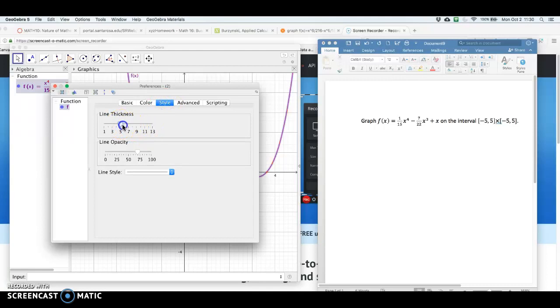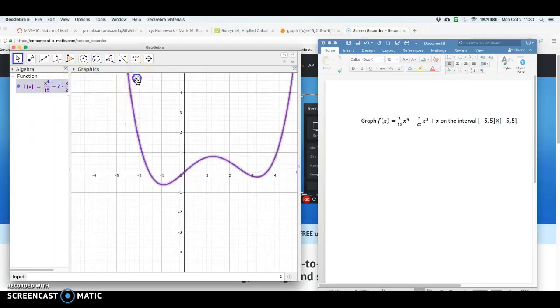And if I click on style, I could increase the line thickness if I want to make this, say, a thicker line. So notice I've got the function, the caption f of x, thicker and purple.